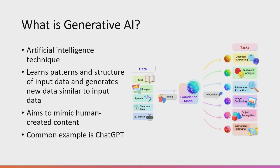We perform some sort of machine learning model on the data and we get an output, which can be any of those different forms of data. The aim is to mimic human-created content. The most common example people are aware of is ChatGPT.